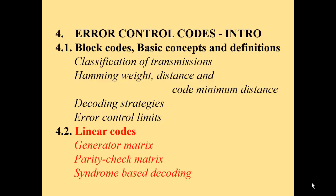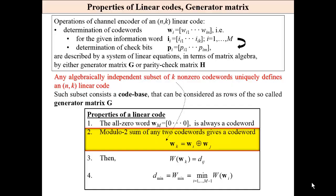Linear codes: generator matrix, then parity check matrix and syndrome-based decoding. The operation of a channel encoder of the N,K linear code is a determination of codewords for the given information word, determination of check bits — K is the length of the information word — and then determination of M check bits. This operation is described by a system of linear equations in terms of matrix algebra by either a generator matrix or parity check matrix, and I will present both approaches.